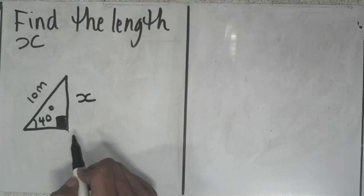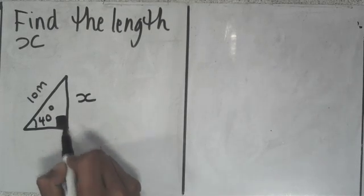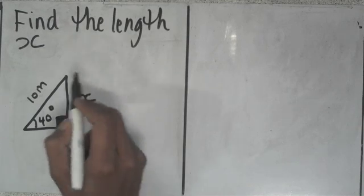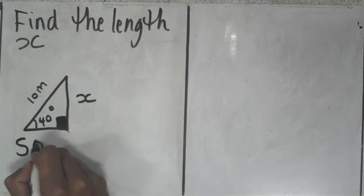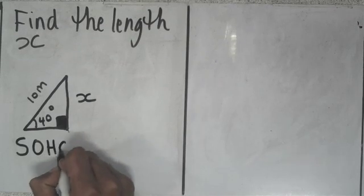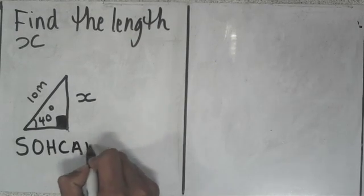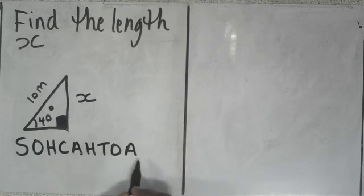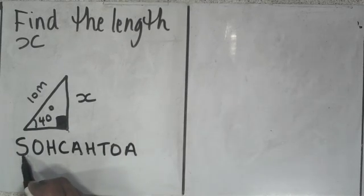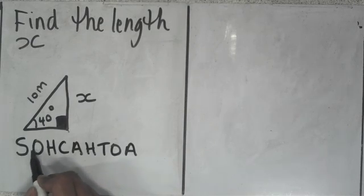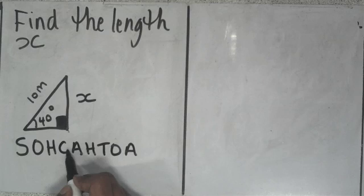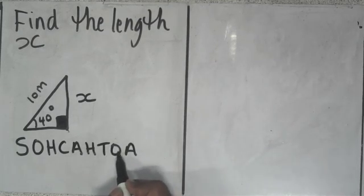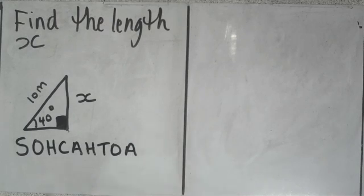Now, to find the length x, you're going to use trigonometry. To remember trigonometry, we use this special word called SOHCAHTOA, which stands for: sin theta is equal to opposite over hypotenuse, cos theta is equal to adjacent over hypotenuse, and tan theta is opposite over adjacent.